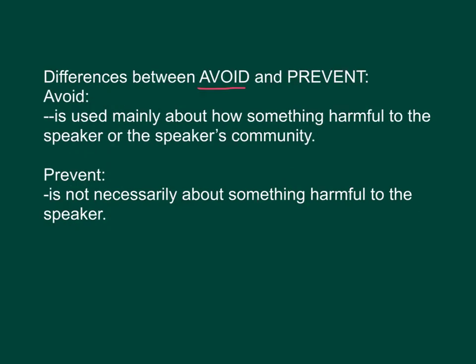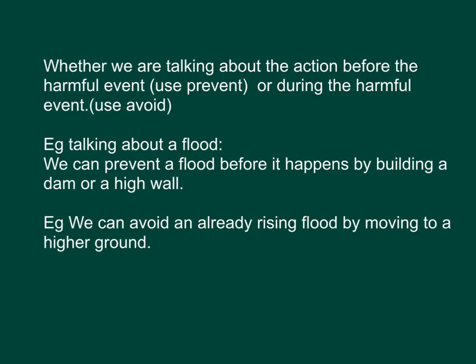The key differences between avoid and prevent: Avoid is used mainly about how something is harmful to the speaker or the speaker's community. Prevent is not necessarily about something harmful to the speaker. When talking about action before the harmful event, use prevent; during the harmful event, use avoid. For example, with a flood: we can prevent a flood before it happens by building a dam or a high wall, or we can avoid an already rising flood by moving to higher ground.